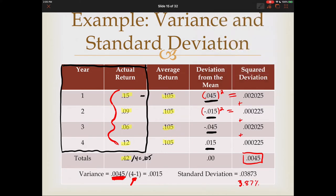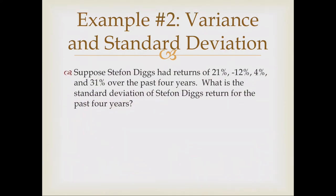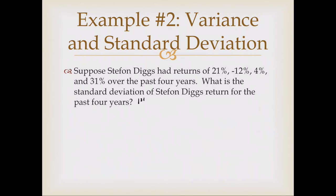Another example: suppose Stefan Diggs has returns of 21%, −12%, 4%, and 31% over the past four years. What is the standard deviation of Stefan Diggs' returns? The first step is to find the arithmetic average. Take the sum of 21%, −12%, 4%, and 31%, divide by the number of years, and we get a simple average of 11%.